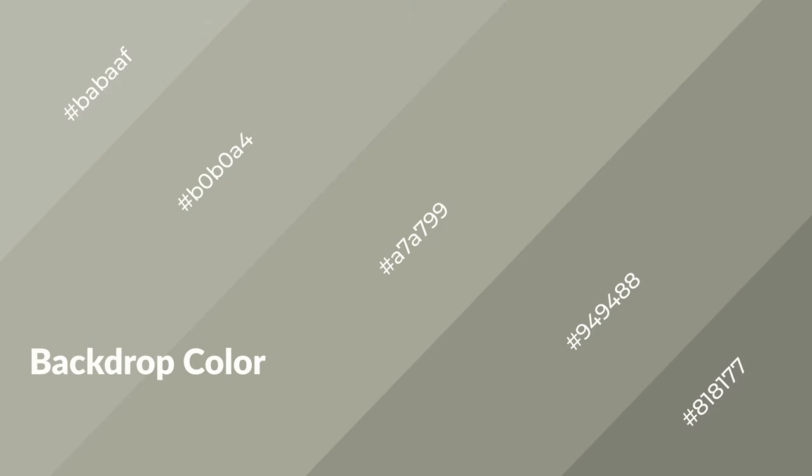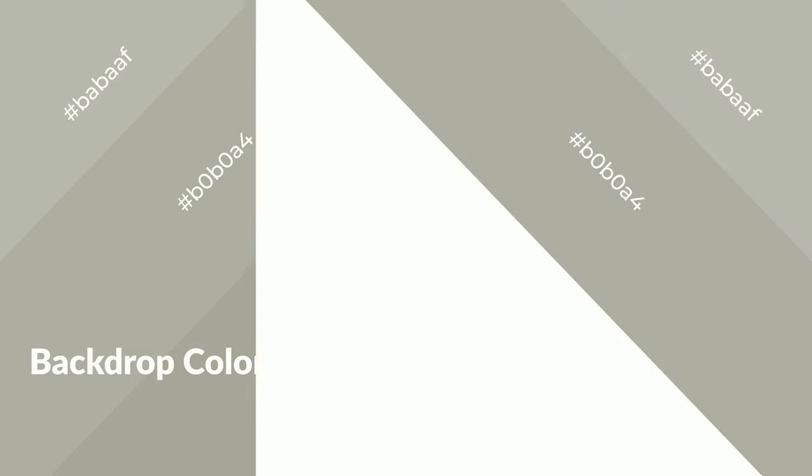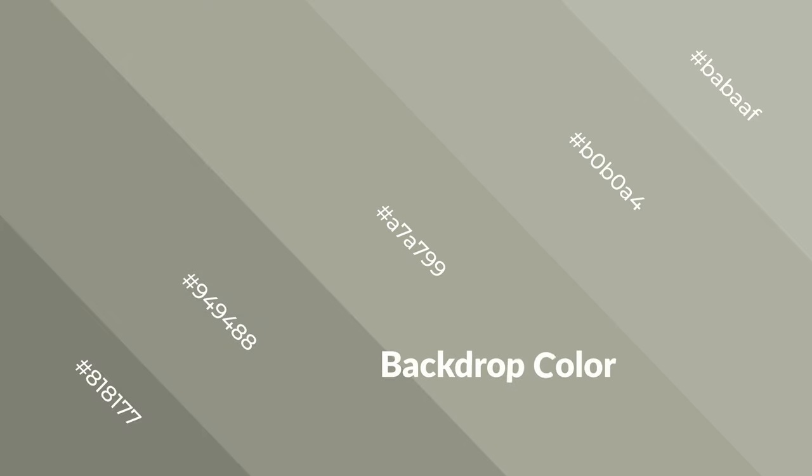Layers and shades create depth and drama. Backdrop is a warm color and it emits cozier and active emotions. Warm colors are symbols of warmth, fire, heat, and sunshine. They also evoke joy, passion, love, and even anger emotions. You can see them used in restaurants and gyms.